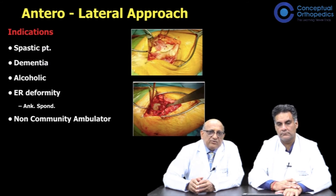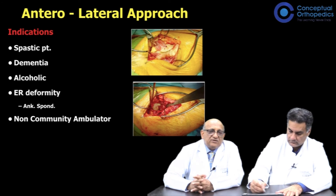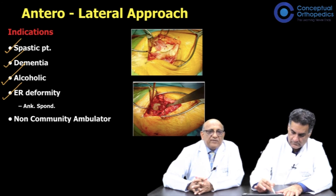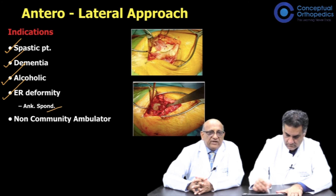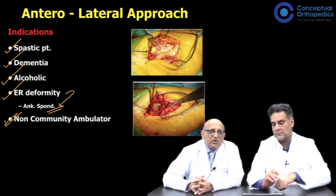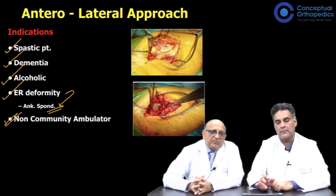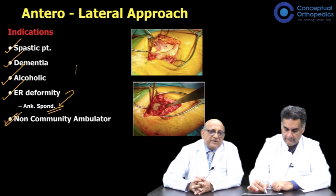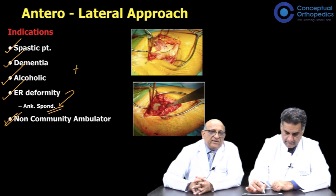My indications for the anterolateral approach are: a patient who is spastic, a patient who has dementia or is alcoholic, a patient with a fixed external rotation deformity such as ankylosing spondylitis, a non-community ambulator, and I would also consider it for patients who require a hip replacement and have presented with a fracture of the neck of femur.